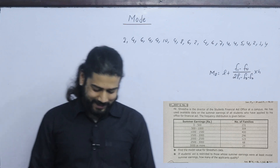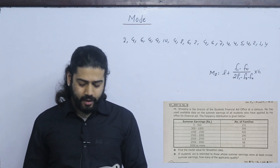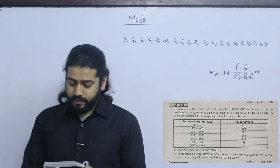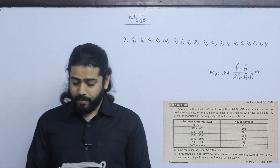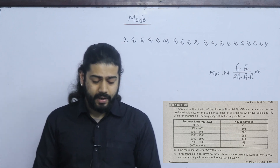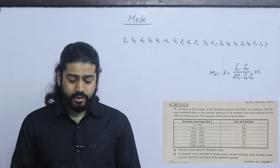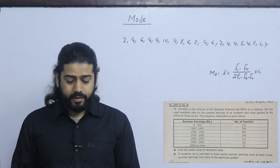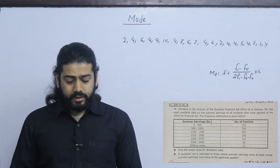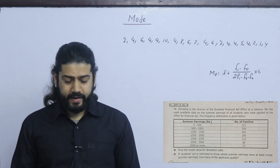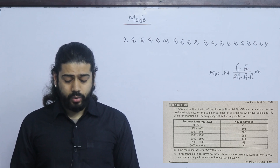Mr. Shesta is the director of the Student Financial Aid Office at campus. He has used available data on the summer earnings of all students who have applied to his office for financial aid. The frequency distribution is given with class intervals: 0–500, 500–1000, 1000–1500, 1500–2000, 2000–2500, 2500–3000, and 3000 or more. Find the modal value. If student aid is restricted to those whose summer earnings are at least the modal summer earnings, how many applicants qualify?